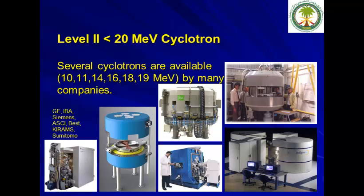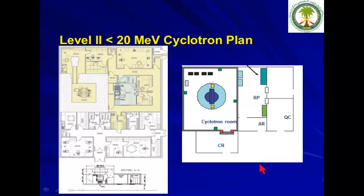The less-than-20 MeV cyclotrons are offered by a variety of companies: GE, IBA, Siemens, ACSI, BEST Cyclotrons, Keyrams, and Sumitomo. They can be standalone or self-shielded cyclotrons. If self-shielded, you don't need thick walls. If not self-shielded, you will need approximately 2-plus meters of concrete for radiation shielding. The production facility includes radiopharmacy along with quality control infrastructure.